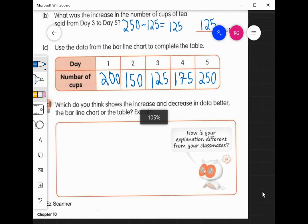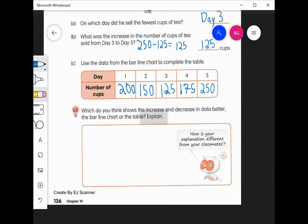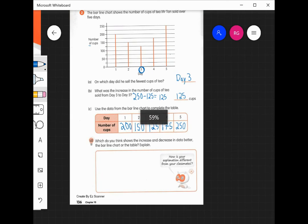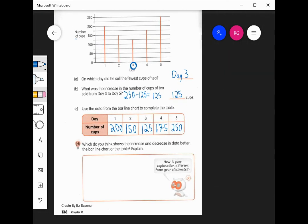And then it says, which do you think shows the increase and decrease in data better, the bar line chart or the table? So you can answer however you would like for this question. So I'll accept all reasonable answers for D.